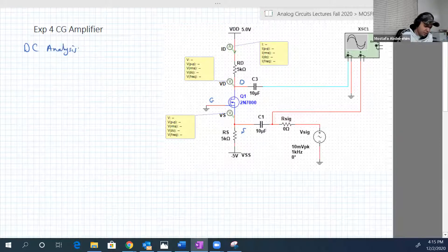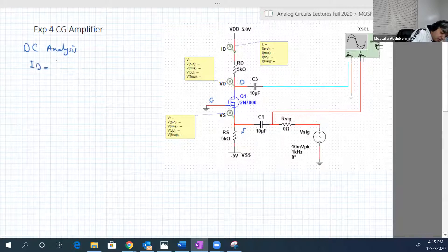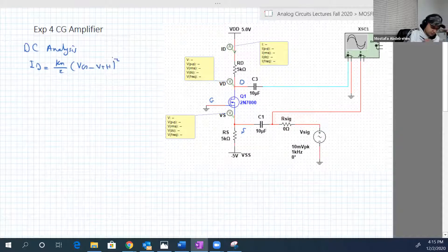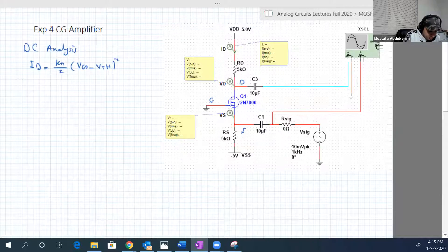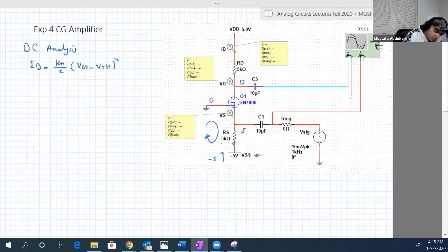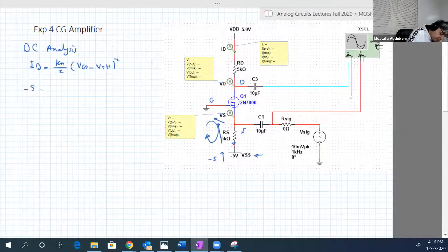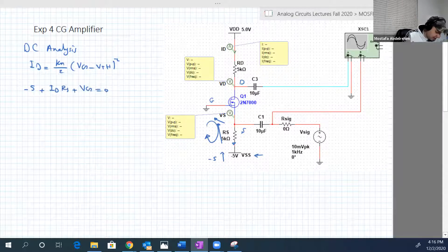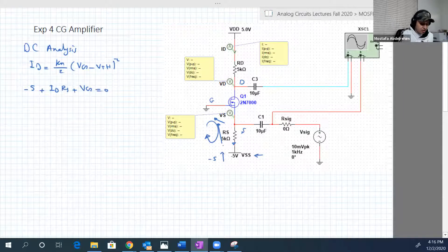Again, the capacitors will be open circuit. I'm going to have the first equation which is ID equal to KN over 2, VGS minus V threshold squared. And from that loop here, remember that loop has a voltage called minus VSS. So minus 5 plus ID times RS plus VGS equal to zero. ID is unknown, VGS is unknown, but RS is known, RS is 5 kilo ohms.